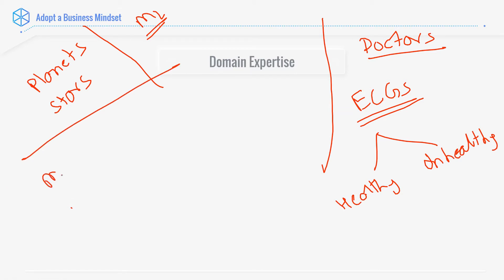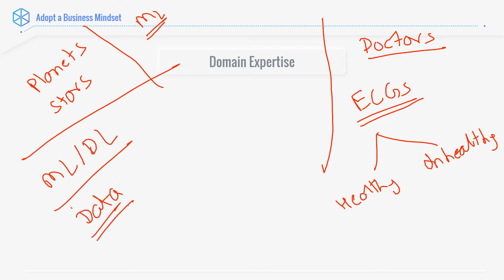ML systems and deep learning systems all learn from data. You can't just randomly give any data. A domain expert can actually tell you what is the most important point in the data. If we take the example of ECG, a doctor could tell you these specific patterns.